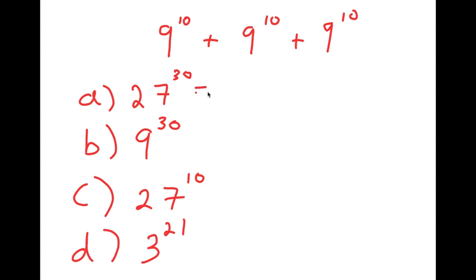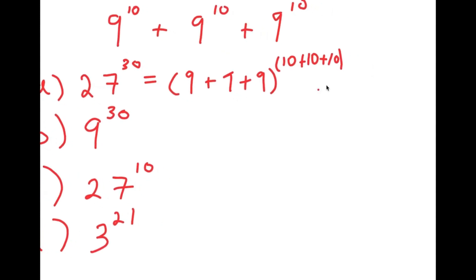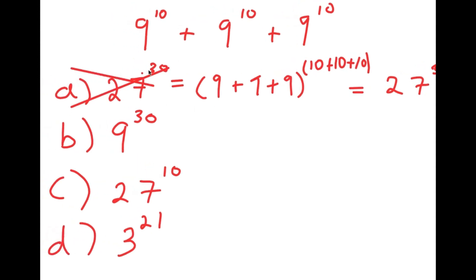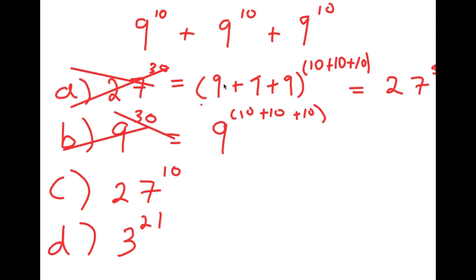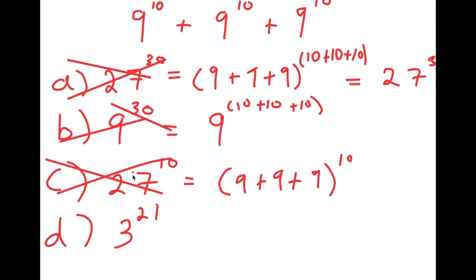Option A, 27 to the power of 30, likely came from adding all the bases and adding all the exponents: 9 plus 9 plus 9 to the power of 10 plus 10 plus 10, giving 27 to the 30th. This is wrong — that's not the proper way to add exponents. Option B, 9 to the power of 30, comes from keeping the base the same and adding the exponents — also wrong. Option C, 27 to the power of 10, comes from adding the bases but keeping the exponent — also wrong.